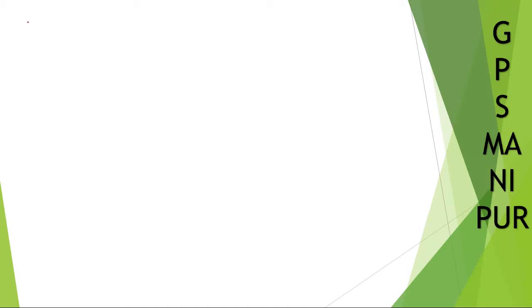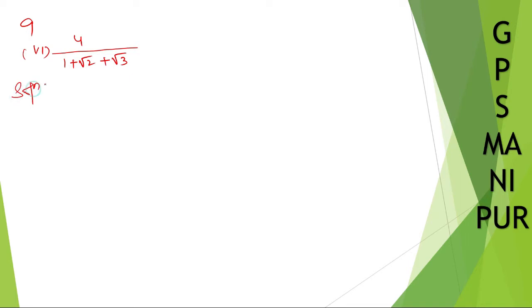We are dealing with question number 9, grammar number 6, which is: rationalize the denominator of 4 divided by 1 plus root 2 plus root 3.